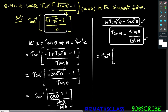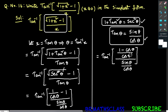That equals tan inverse of: in the numerator, 1 divided by cos theta minus 1 — take the LCM, which is cos theta. We can write this as 1 minus cos theta divided by cos theta, whole divided by sine theta divided by cos theta. In the numerator cos theta and the denominator cos theta cancel. That equals tan inverse of what is remaining in the numerator: 1 minus cos theta.